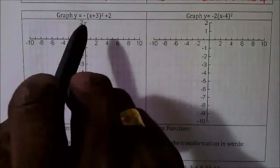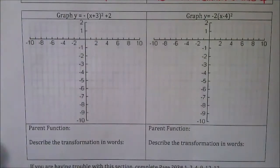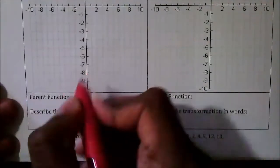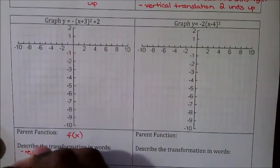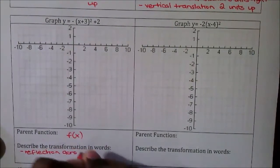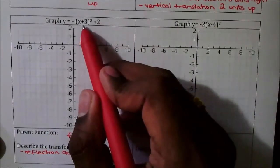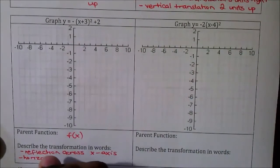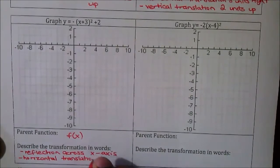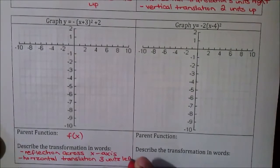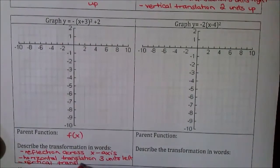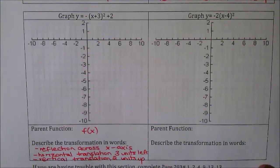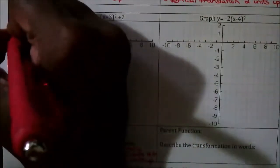Looking at this question, we have y = −(x + 3)² + 2. The parent function is f(x) = x². There are three transformations happening: with the negative, we have a reflection across the x-axis; with the positive 3, we have a horizontal translation three units left; and the positive 2 gives a vertical translation two units up.